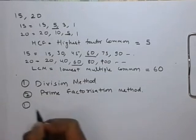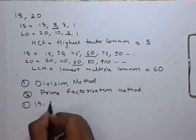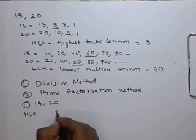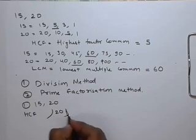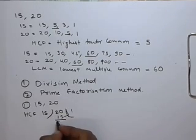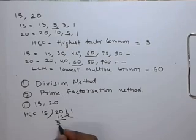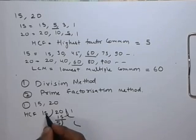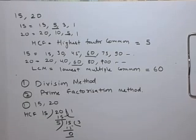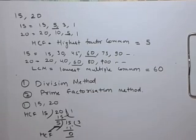In the division method, for 15 and 20, to identify the GCF, we will divide the larger number by the smaller number. In this process, the remainder becomes the divisor and the divisor becomes the dividend. We continue this process till we get remainder 0. The last divisor will be the GCF, which is 5.